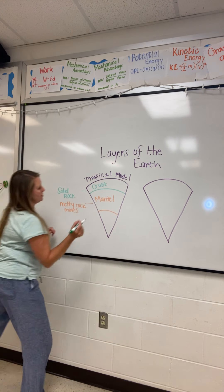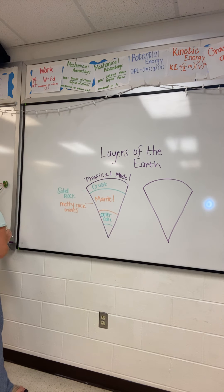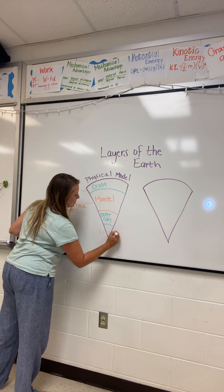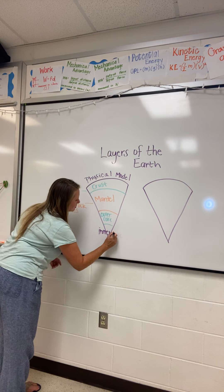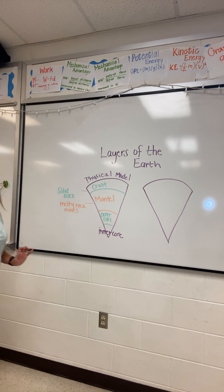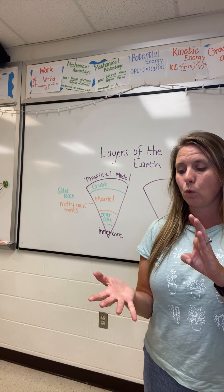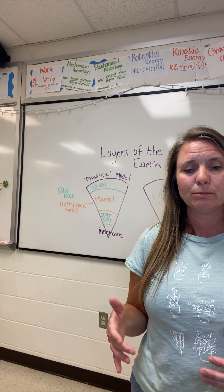Then we have the outer core, and then our inner core. Those are our four different layers of the physical model. The outer core is also kind of a flowy environment. These are terms I normally call 'baby terms' — ones you've probably heard in another class, maybe geography or back in middle or elementary school. We are going to use them, but we're going to make this a little more higher education.